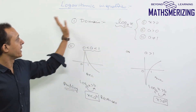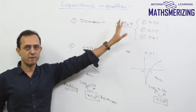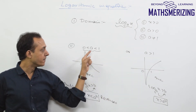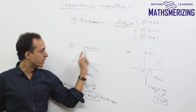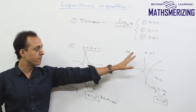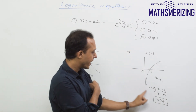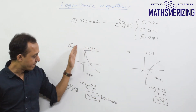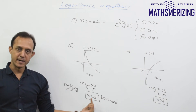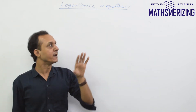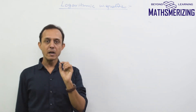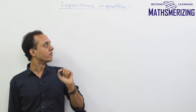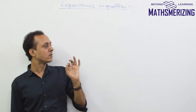So for any logarithmic inequality there are only two steps: first, take care of the domain; second, when taking antilog, decide whether the base is less than one or greater than one. When the base is greater than one, the sign will not change; when the base lies between zero and one, the sign reverses. There are two kinds of problems — one with a constant base and one with a variable base. We will start with constant base problems.